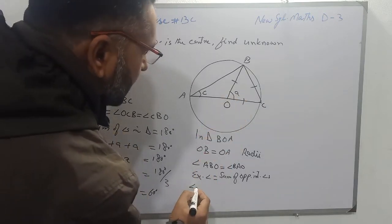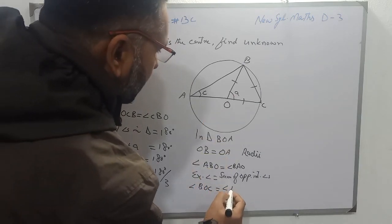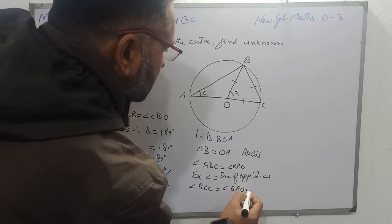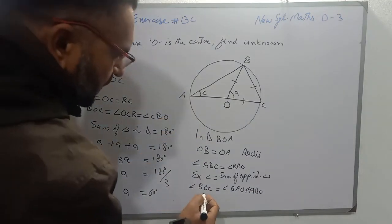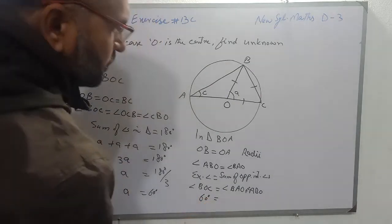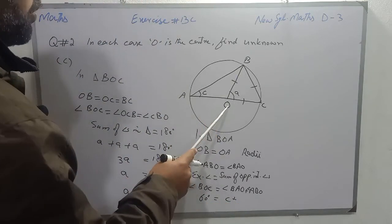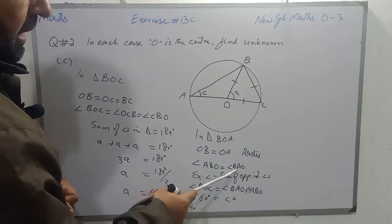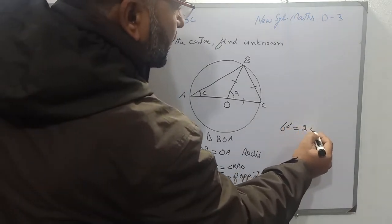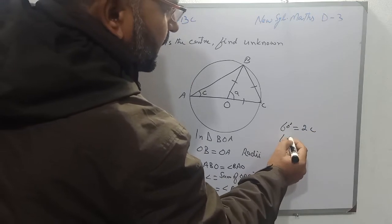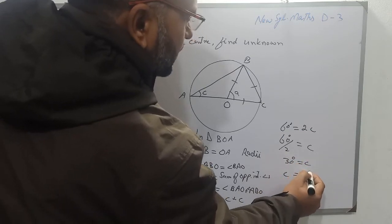The exterior angle BOC equals the sum of interior angles BAO plus ABO. The exterior angle value is 60 degrees. Both interior angles equal C, so 60 degrees equals C plus C, meaning 60 degrees equals 2C. Dividing by 2, the value of C is 30 degrees. So C equals 30 degrees, and that is part C of question number 2.